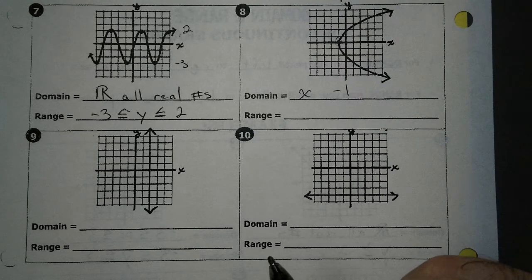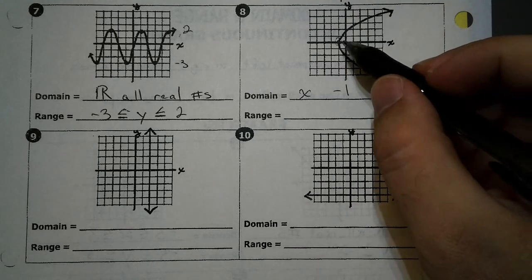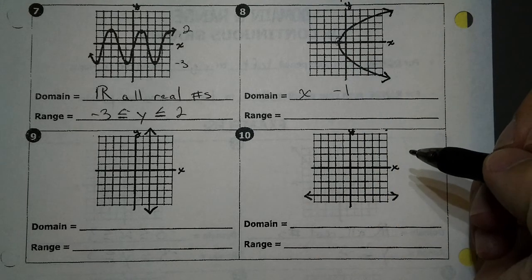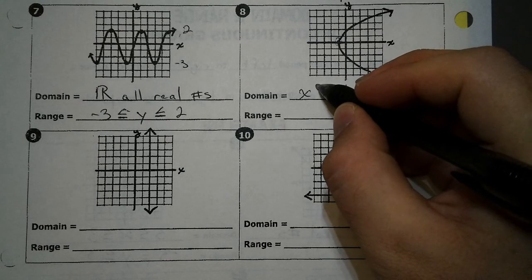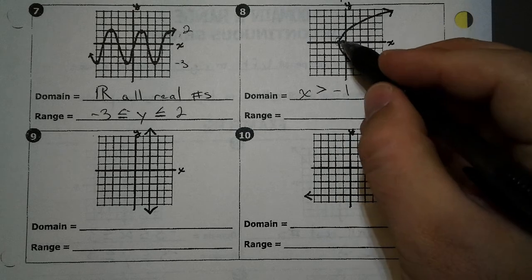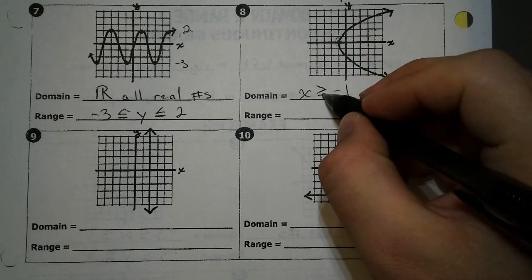If there's one stop, there's one symbol. Are my x values bigger or smaller than negative 1? They are bigger. So open up towards the x. This is a closed dot, so it gets included.